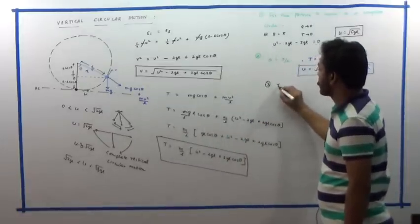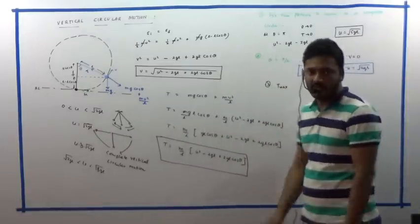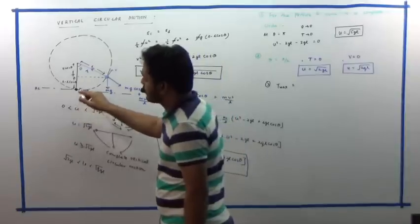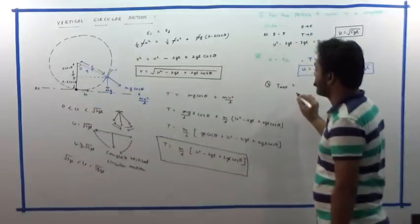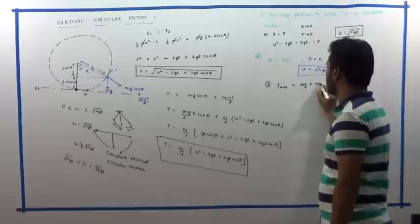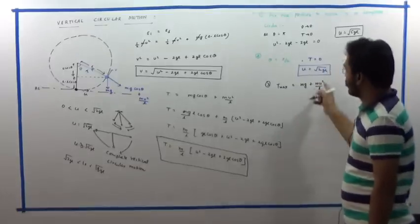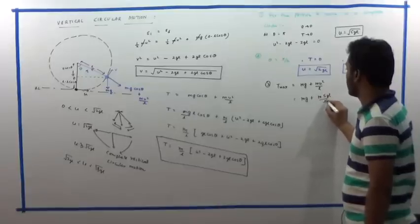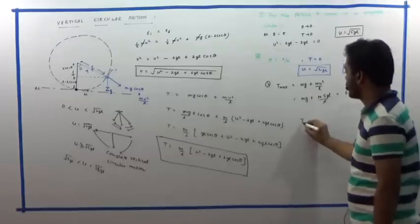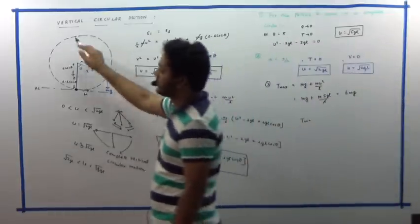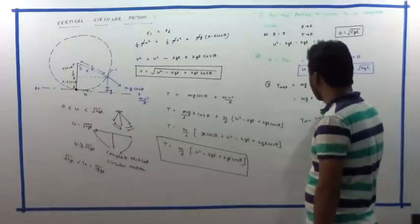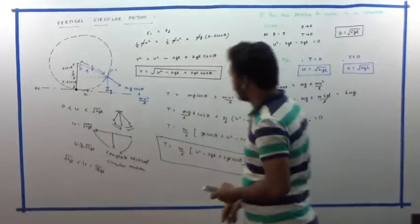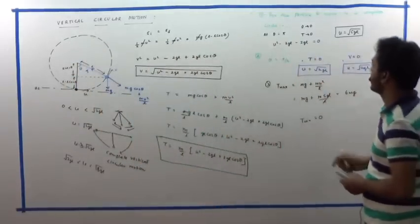Another common question: maximum and minimum tension during vertical circular motion. Maximum tension occurs at the bottommost point: T_max = mg + mu²/L. If u = √(5gL), then T_max = mg + 5mg = 6mg. Minimum tension occurs at the highest point, where tension approaches zero and the centripetal force is entirely provided by the weight of the object.